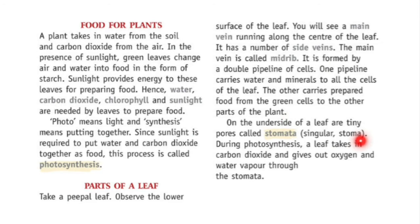The singular form of stomata is stoma. During photosynthesis, a leaf takes in carbon dioxide and gives out oxygen and water vapor through stomata. A leaf has a middle main vein called the midrib, and there are side veins also. The purpose of the vein is to carry water and minerals to all the cells of the leaf. There are tiny pores on the leaf called stomata. The carbon dioxide is taken in and oxygen and water vapor are given out through these tiny pores.